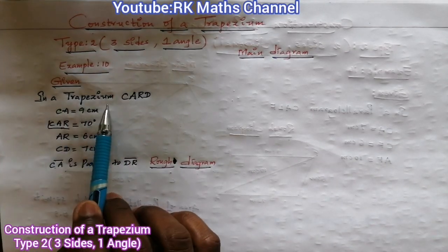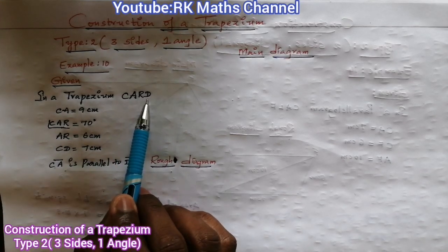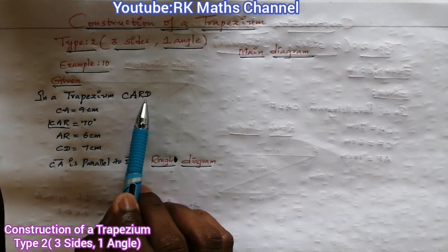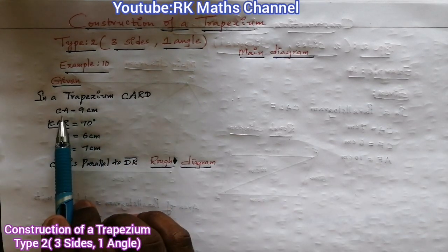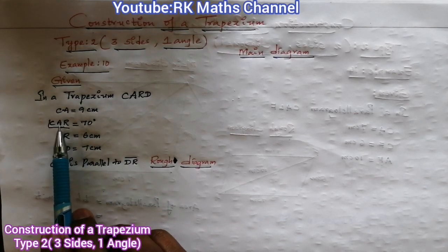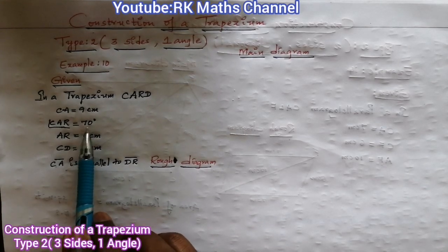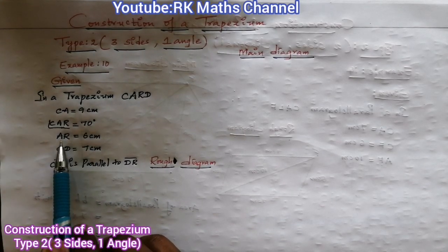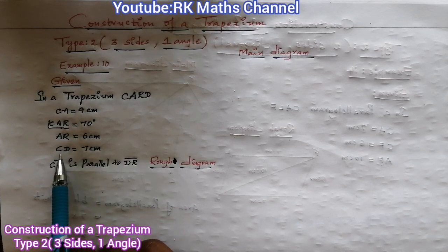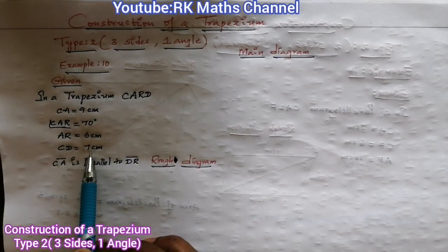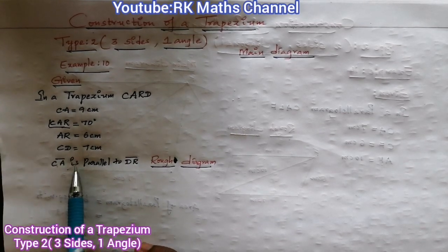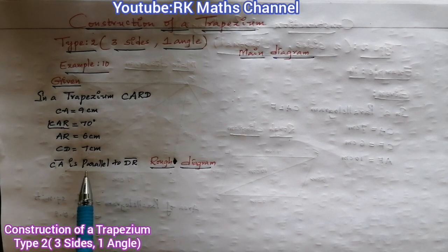This example is trapezium CARD. The given measurements are: CA is 9 cm, angle CAR is 70 degrees, AR is equal to 6 cm, and CD is equal to 7 cm. CA is parallel to DR.